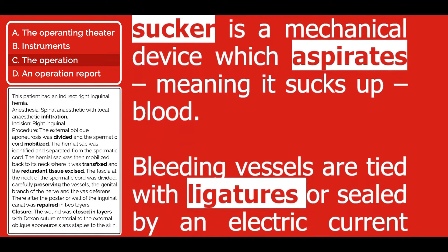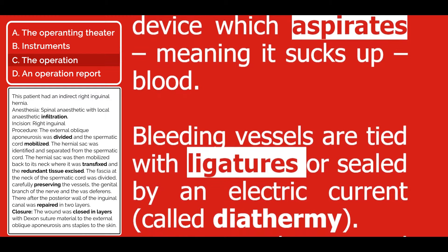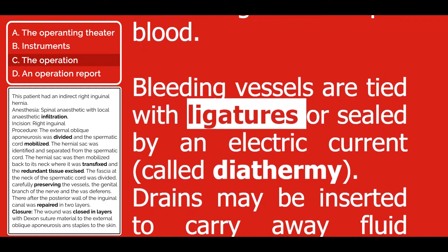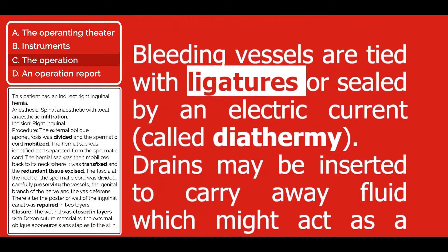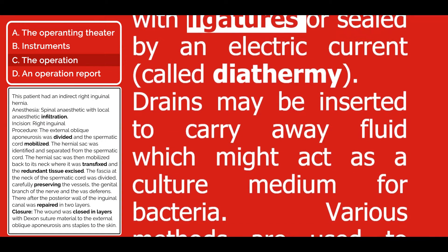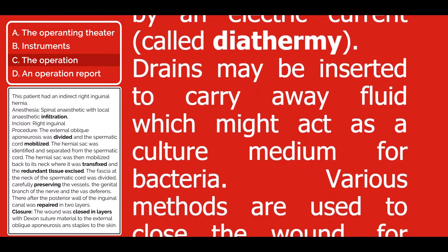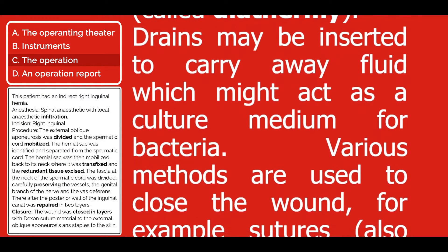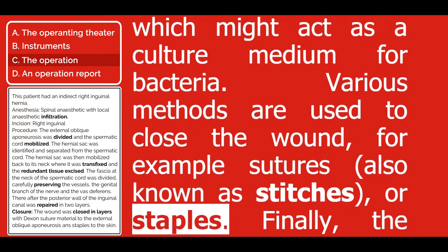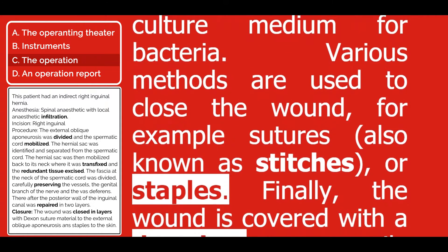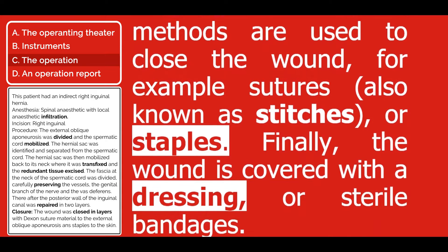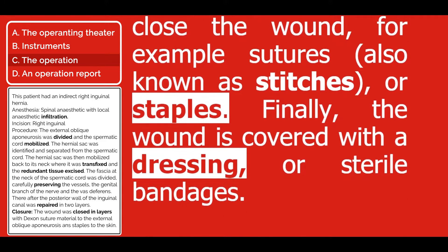Bleeding vessels are tied with ligatures or sealed by an electric current, called diathermy. Drains may be inserted to carry away fluid which might act as a culture medium for bacteria. Various methods are used to close the wound — for example, sutures, also known as stitches, or staples. Finally, the wound is covered with a dressing or sterile bandages.